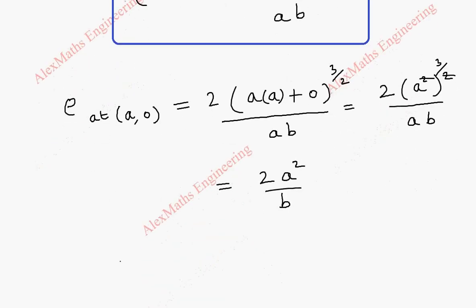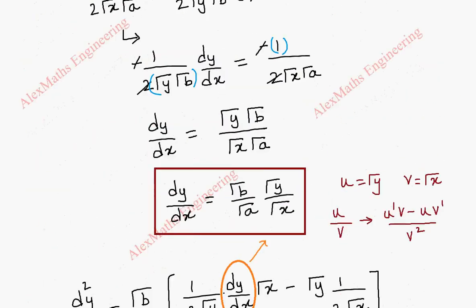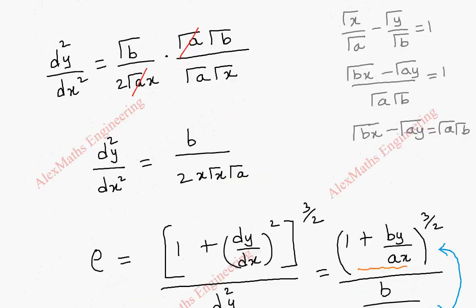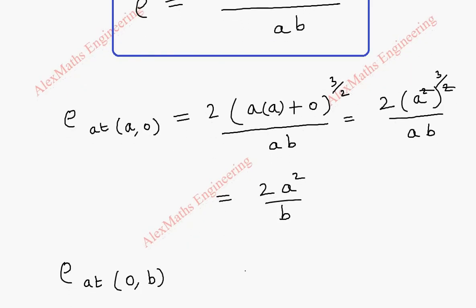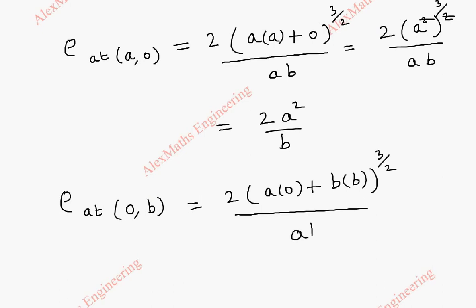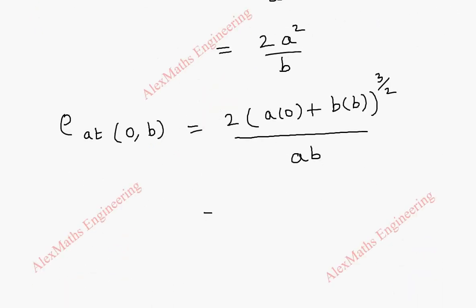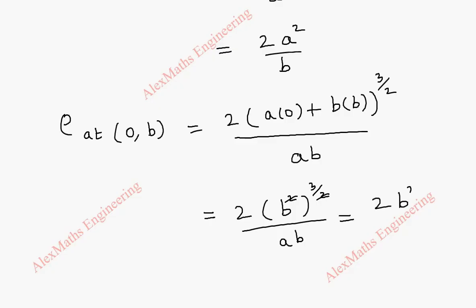In the same way, we find the radius of curvature rho at (0, b), which is the point where it touches the y-axis. In place of x we put 0 and in place of y we put b. So this is 2 into a into 0 plus b times b, whole power 3 by 2, divided by ab. This gives 2 into b squared, whole power 3 by 2, divided by ab. Cancelling: b cubed over b is b squared. So rho at (0, b) equals 2b squared by a.